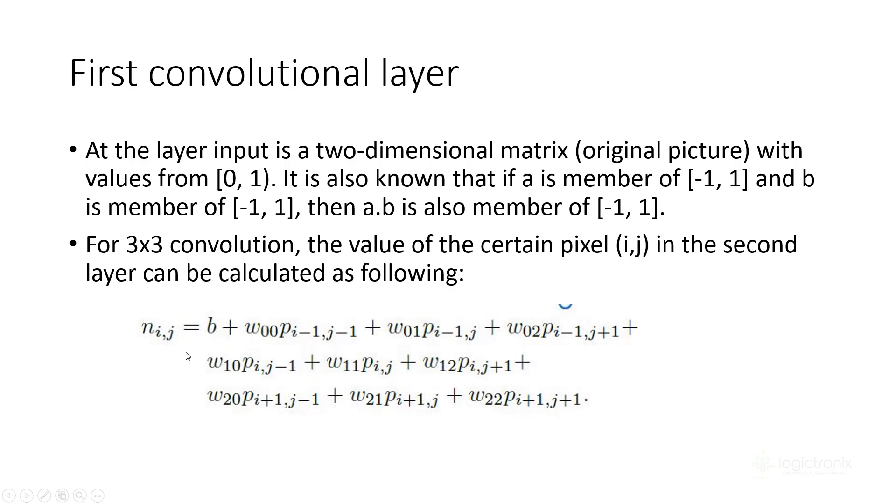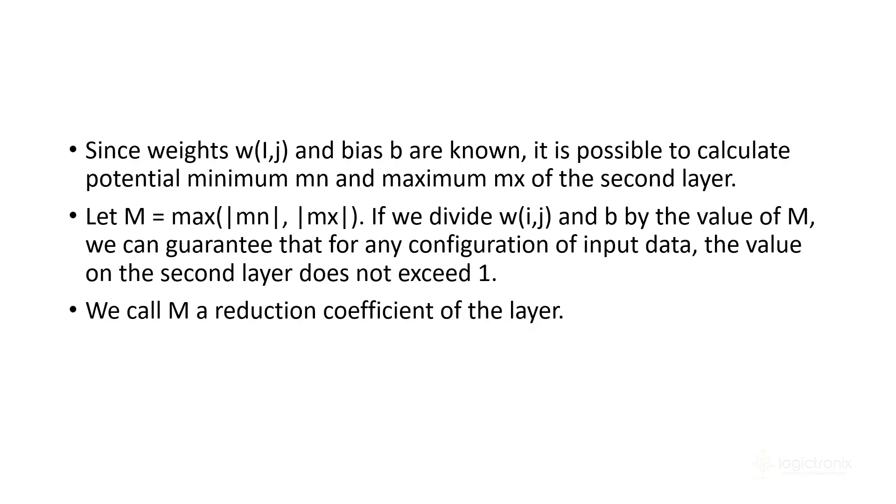There is a term called reduction coefficient M. M is the maximum of the modulus of minimum value and maximum value. It calculates the max of all the pixels. Why do we need this? Because we need to normalize all the values within [-1,1]. We take the maximum values among them. If it has 6 or -7, we take -7, make modulus, and get 7, so M equals 7.